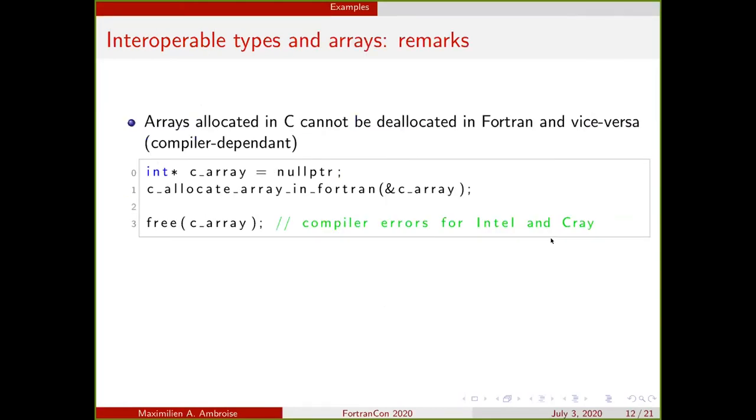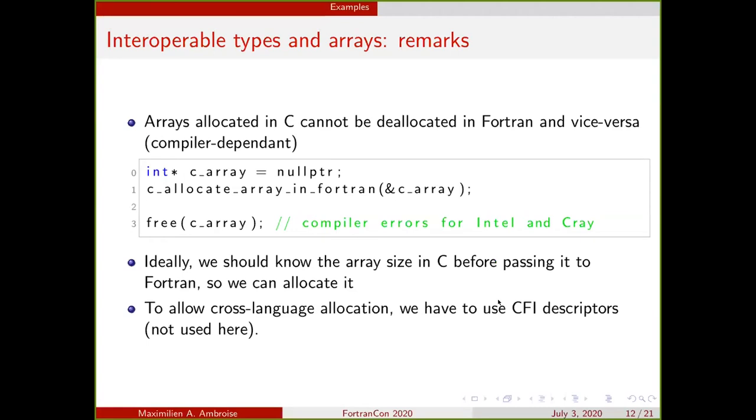As you have probably heard beforehand, we can't allocate arrays in C and allocate them in Fortran because that in most cases gives an error. Actually, for the GNU compilers, this actually works, but it's not really recommended. Ideally, we should know the array size in C before passing it to Fortran. But that's not always the case. That's where we actually use the CFI descriptors, but that's not the case in our interface. We haven't used the CFI descriptors.